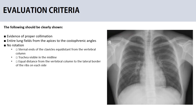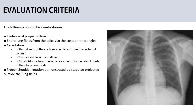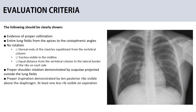To ensure there is no rotation, there are many ways to check from the image: the sternal ends of the clavicle should be at equal distance from the spine, the trachea should be visible in the midline, or you can evaluate the lateral borders of the ribs on each side which should again be at equal distance from the vertebral column. Another important thing is proper shoulder rotation, demonstrated by scapula borders being outside the lung fields.